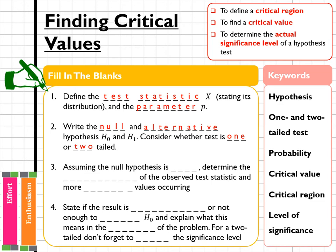Step three, assuming that the null hypothesis is true, determine the probability of the observed test statistic and more extreme values occurring. So remember when you're testing you want to use either the less than or equal to sign or the greater than or equal to sign.